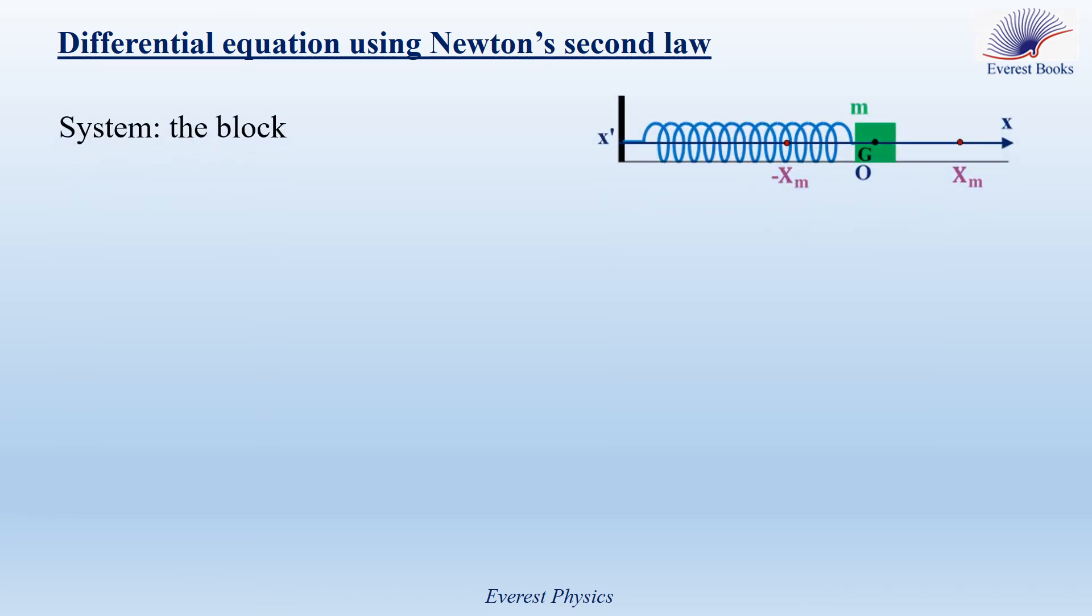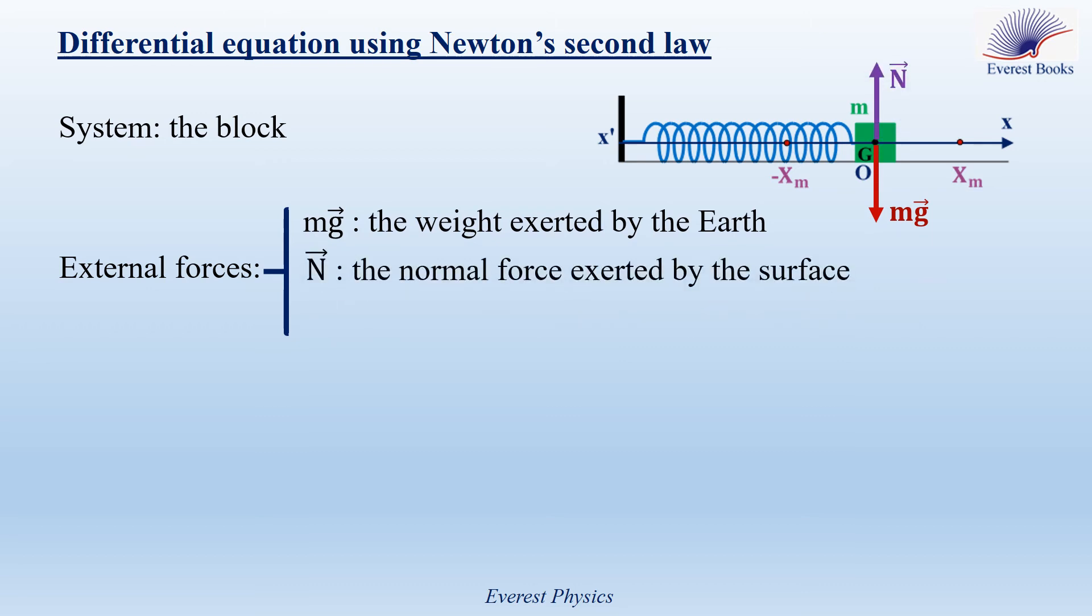But in this case, we take the block as the system. So, the external forces acting on the block are its weight, which is always vertically downward, the normal force, which is always vertically upward, and the restoring force or the spring force. Take into account this force is directed towards the free end of the spring. When the spring is elongated, T is directed horizontally to the left. And when the spring is compressed, T would be horizontally to the right.